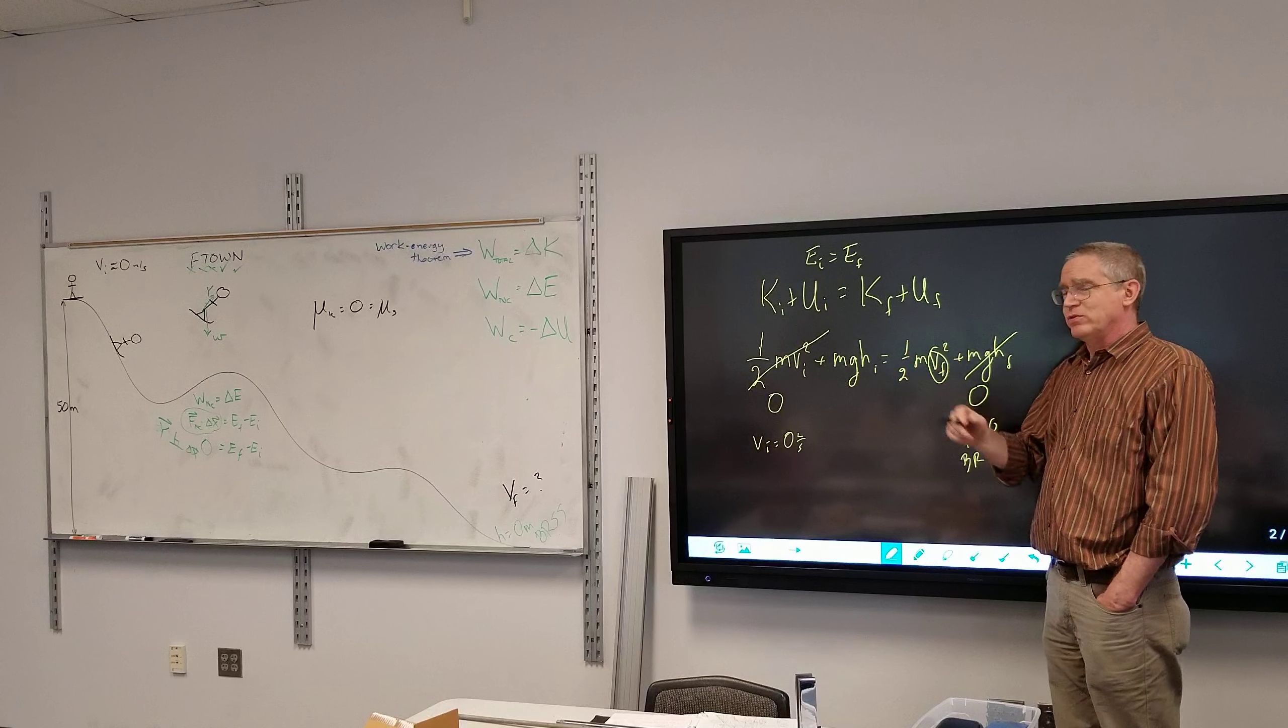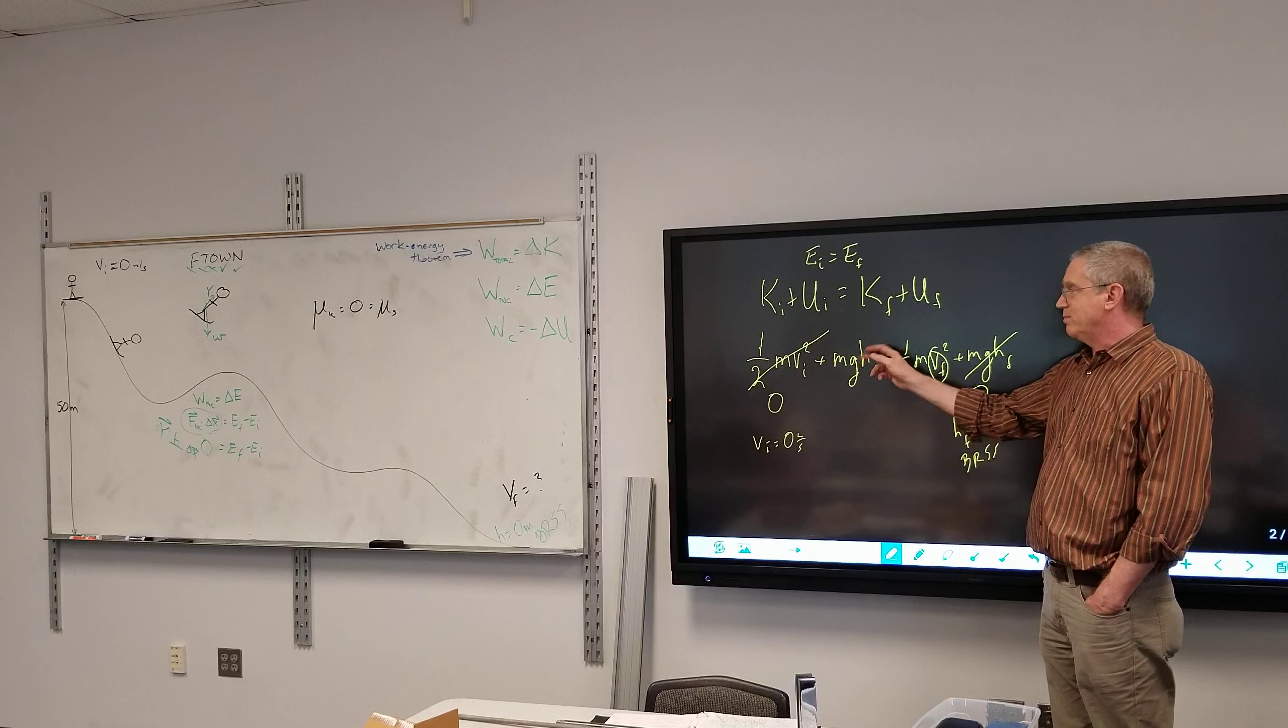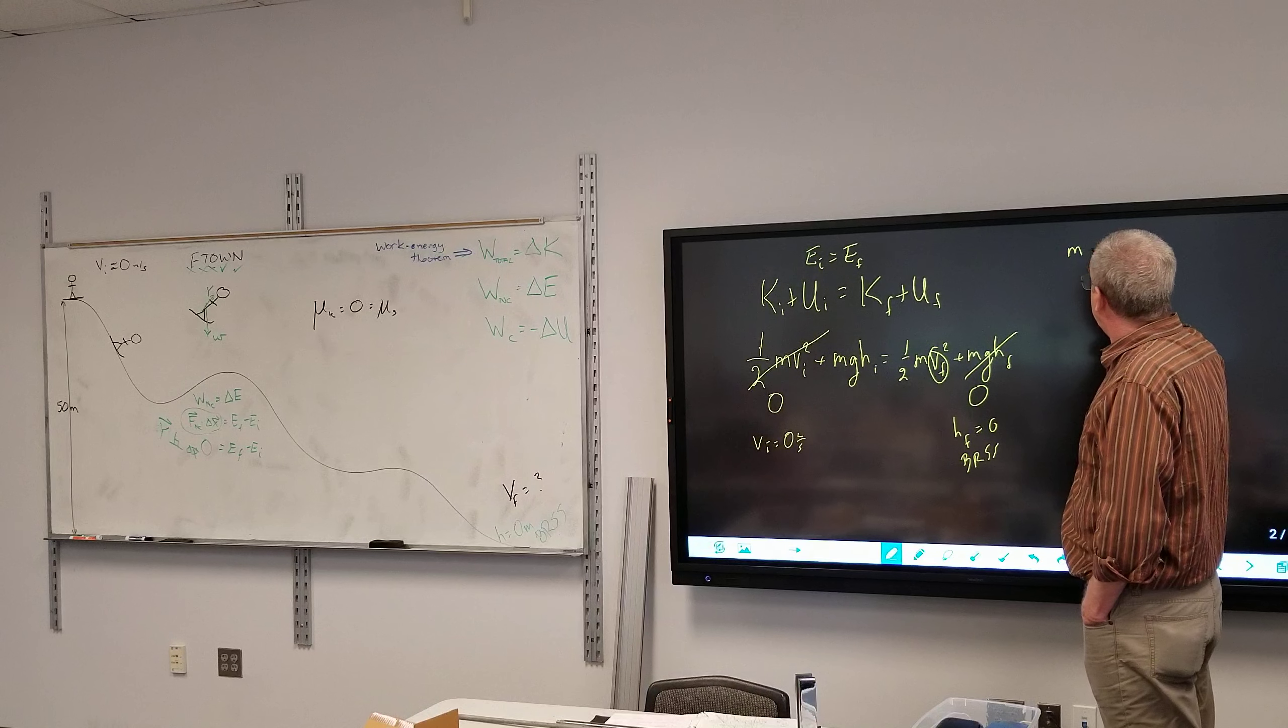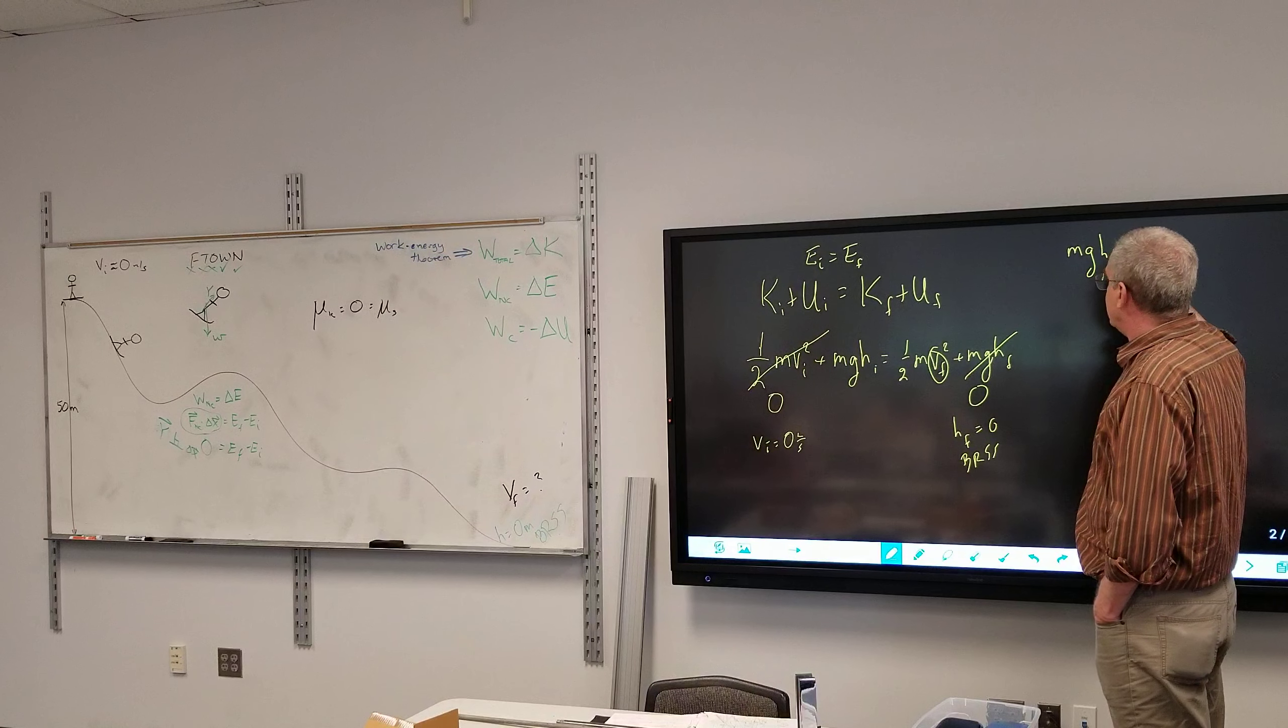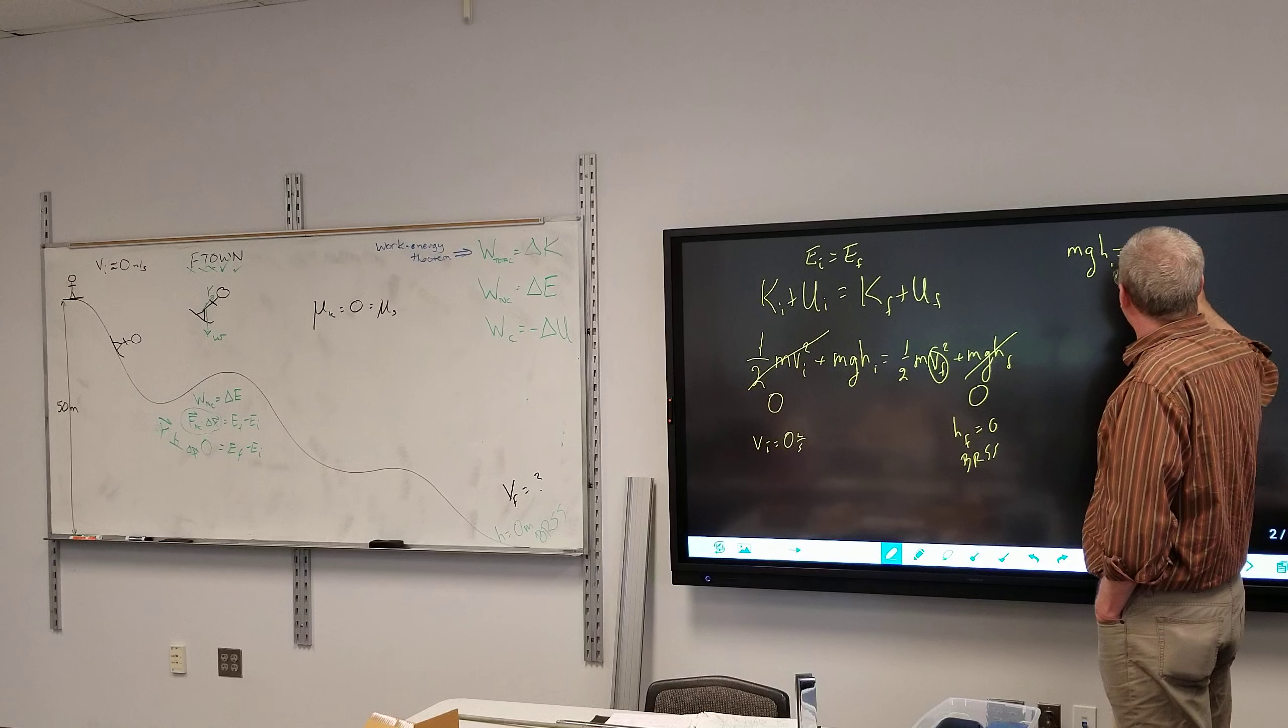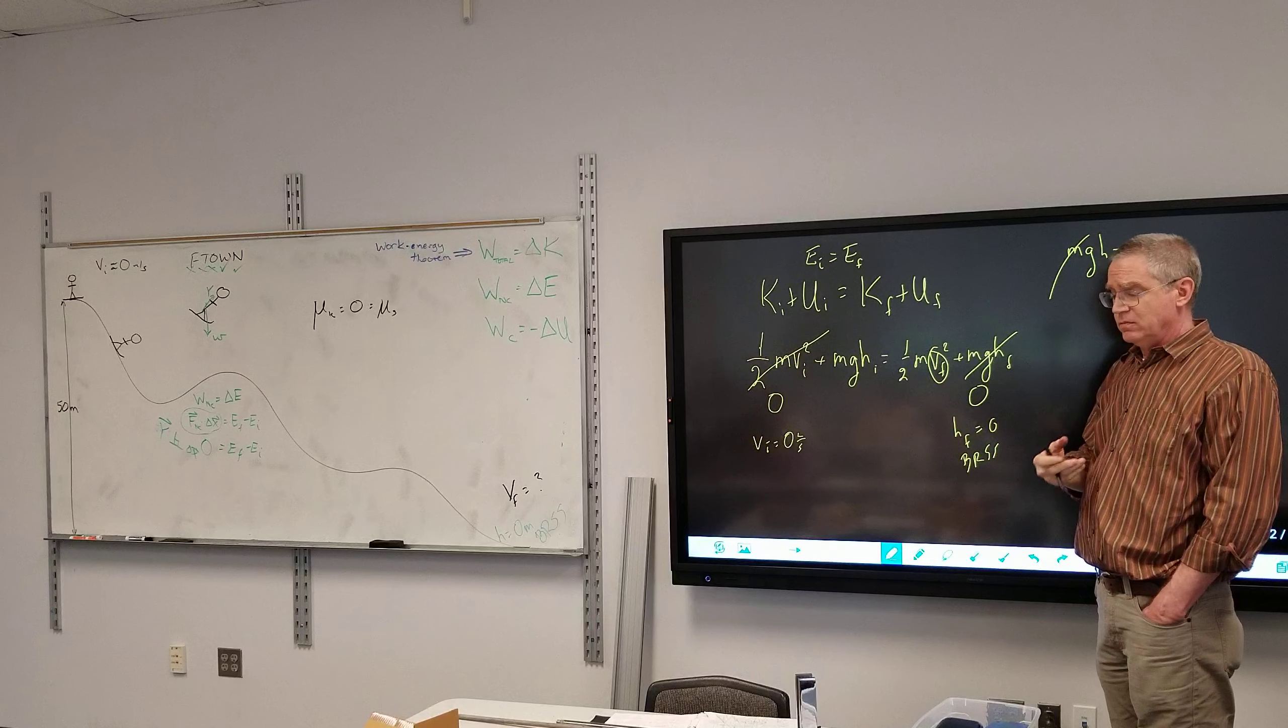So, if you're comfortable with it, we can just, since I have mass in both terms, I can cancel it out. Or, if you're not comfortable with it, just make up a number, not zero. Don't put zero for the mass. So, let's just divide the mass out. So, we have mgh.